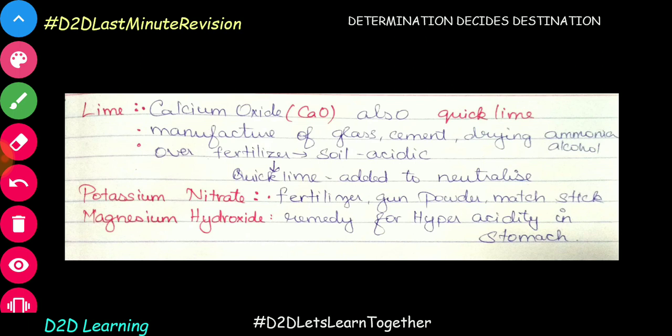The last one — quick lime, also called lime. Lime is calcium oxide (CaO). It is used to make glass, cement, and to treat acidic soil. Now the soil is very acidic, so quick lime will neutralize it. Potassium nitrate is used in NPK fertilizers, gun powder, and match sticks.